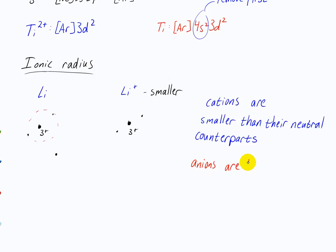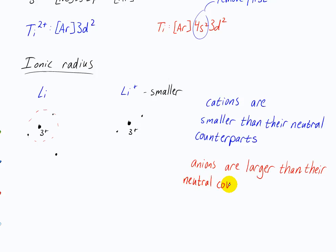And anions tend to be larger than their neutral counterparts. You don't have to memorize this if you understand the reasons: if you understand effective nuclear charge and that higher n shells are further from the nucleus, you can figure it out by thinking through the effects of those rules.